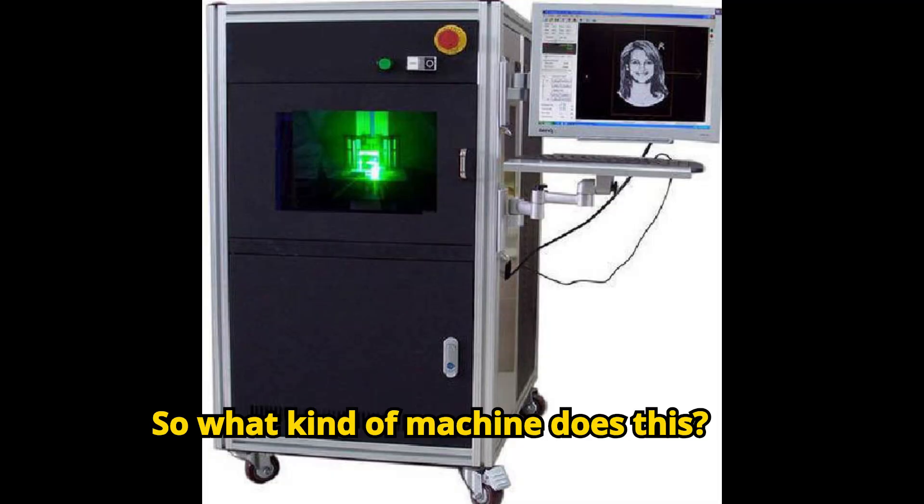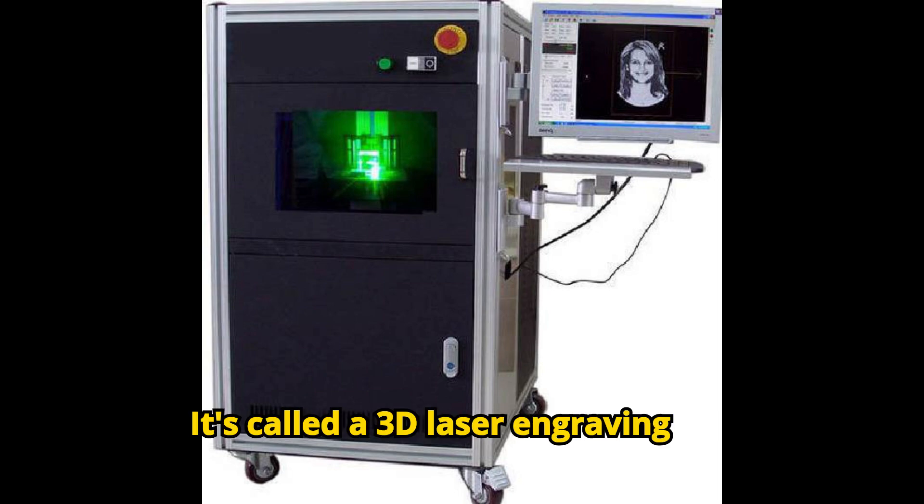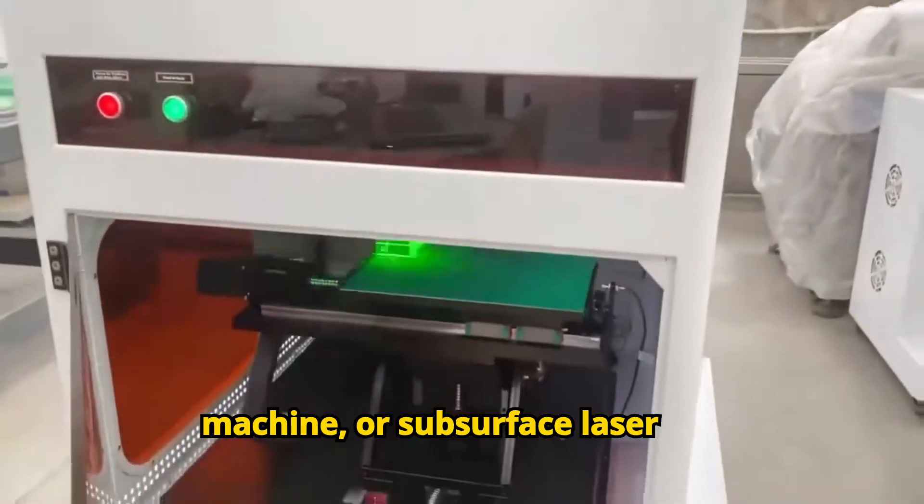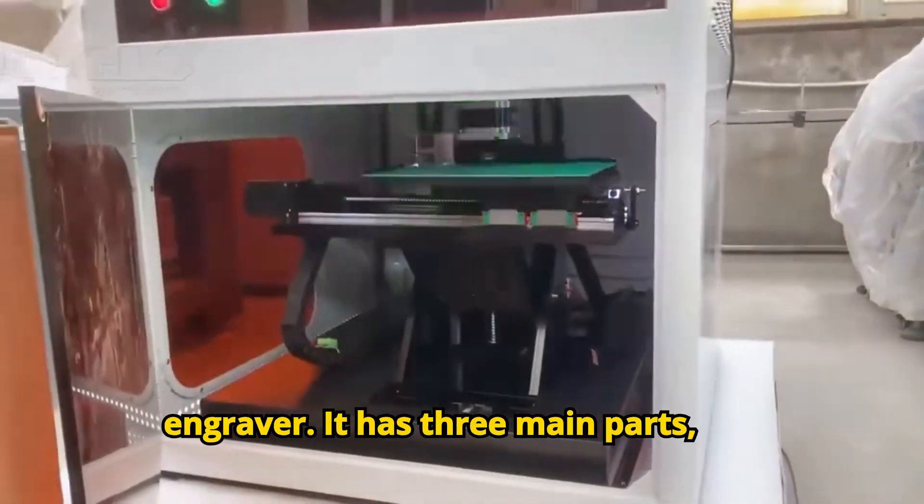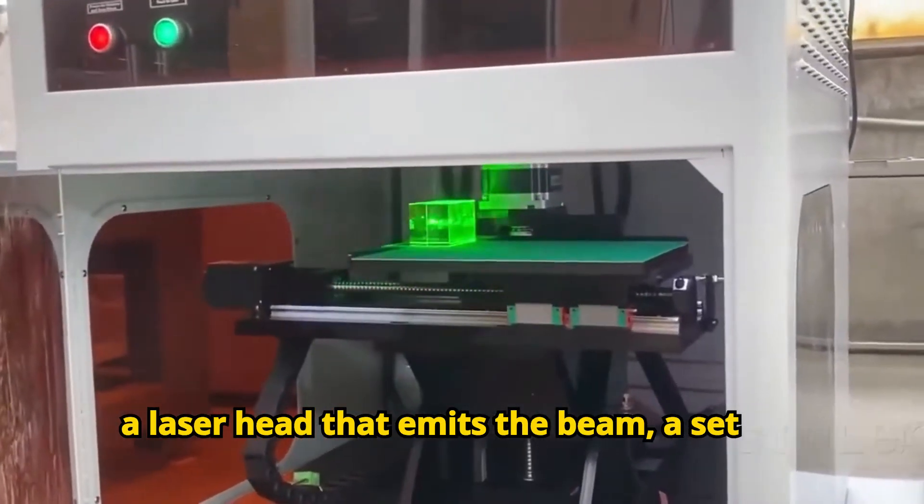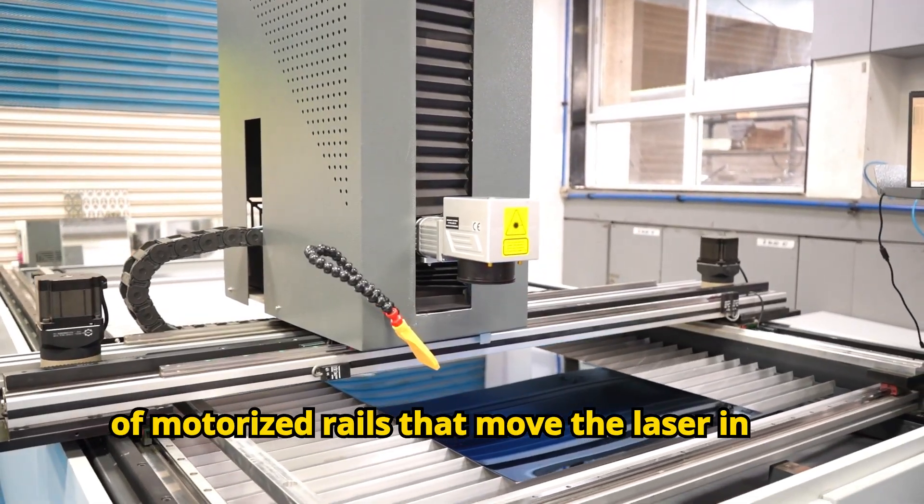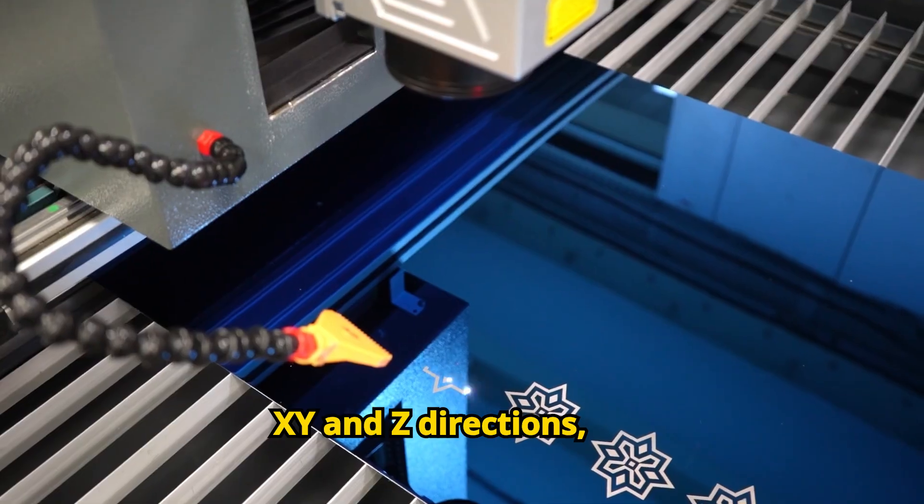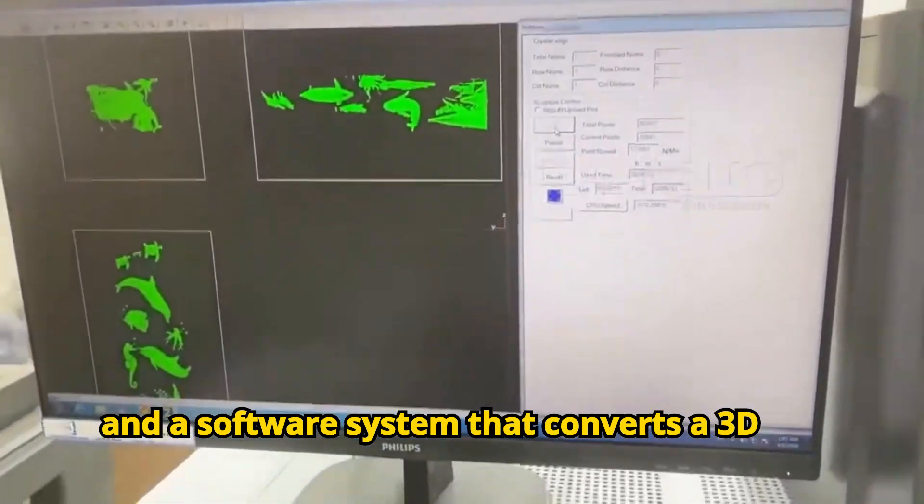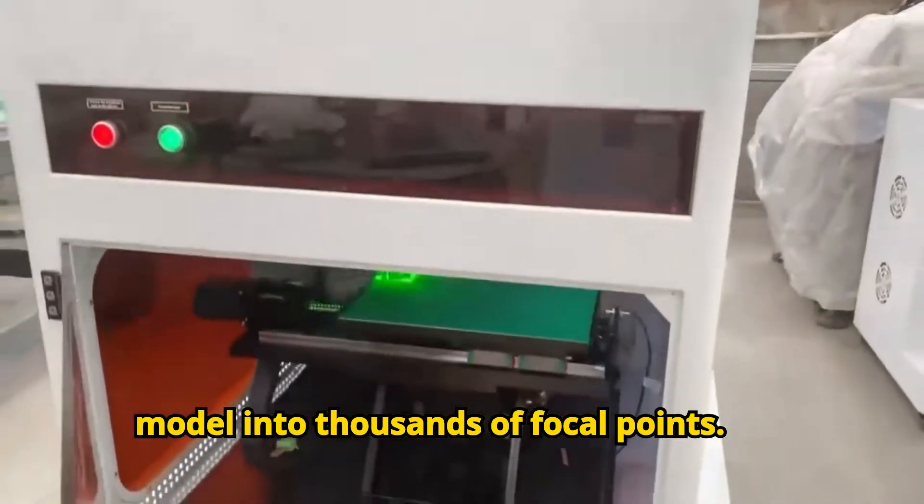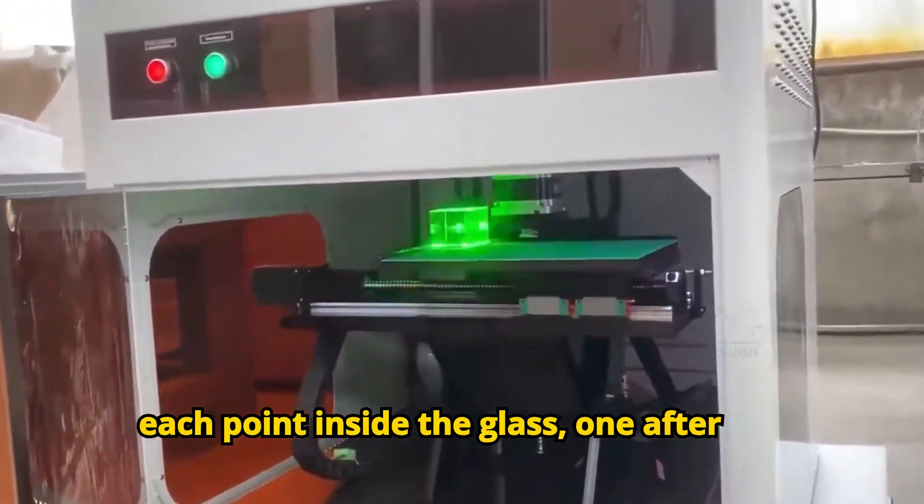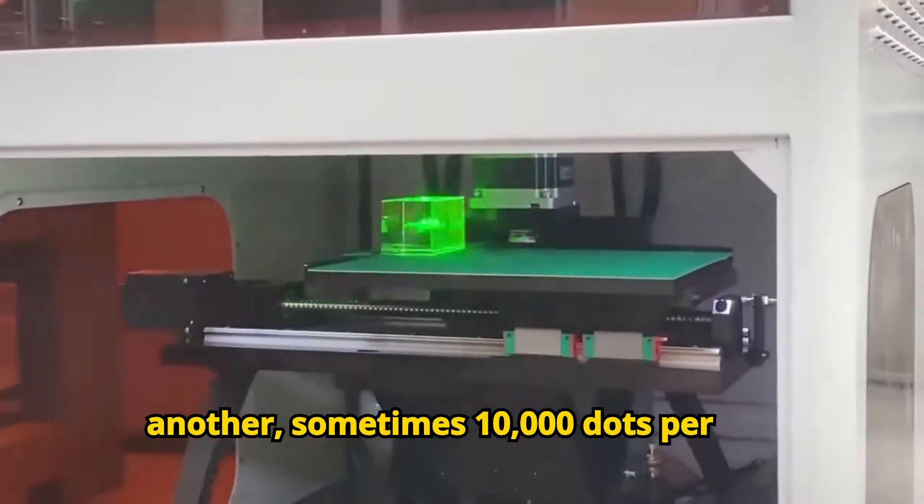So what kind of machine does this? It's called a 3D laser engraving machine, or subsurface laser engraver. It has three main parts: a laser head that emits the beam, a set of motorized rails that move the laser in X, Y, and Z directions, and a software system that converts a 3D model into thousands of focal points. The machine rapidly fires laser pulses at each point inside the glass, one after another, sometimes 10,000 dots per second.